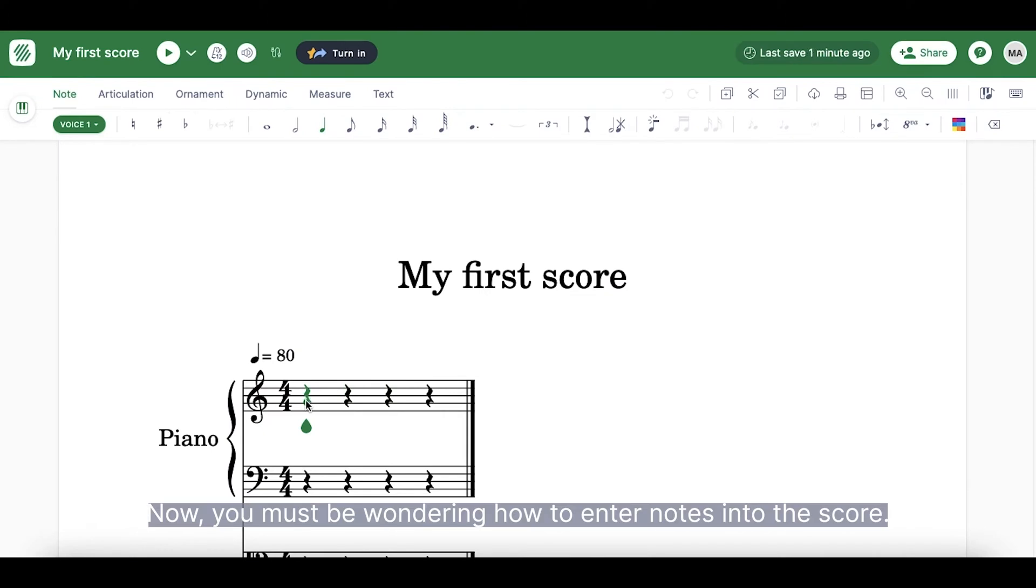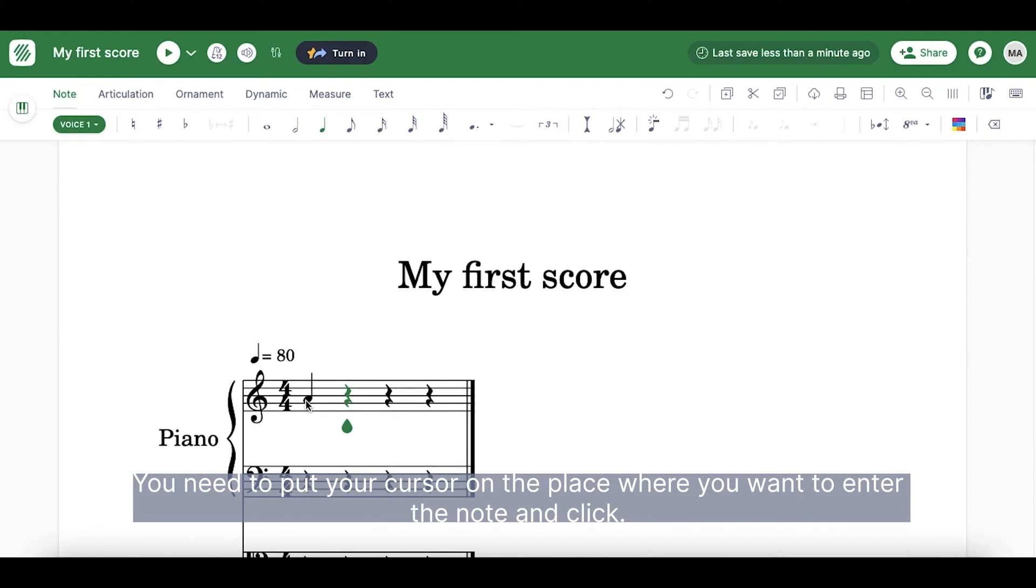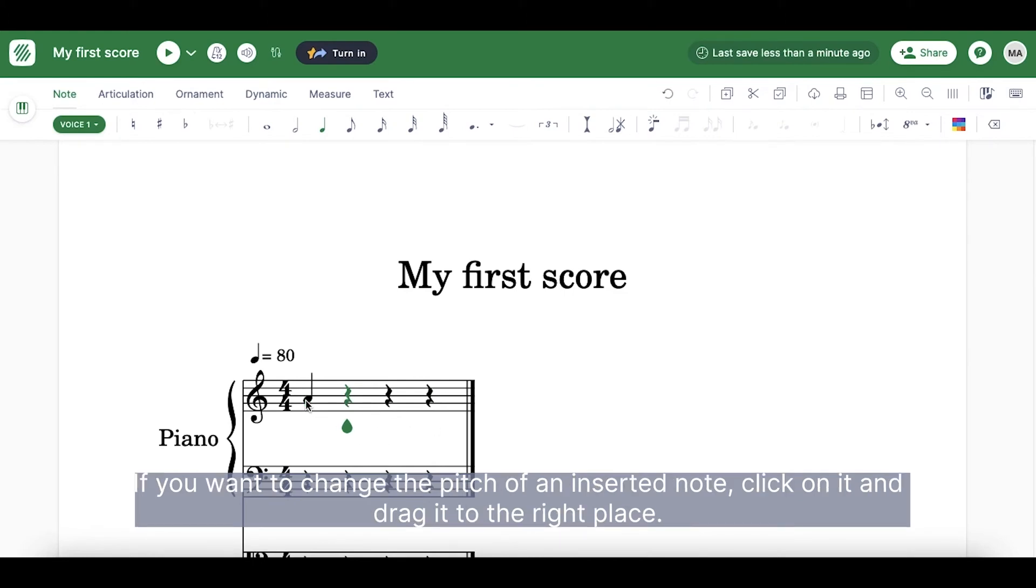Now, you must be wondering how to enter notes into the score. You need to put your cursor on the place you want to enter the note and click. If you want to change the pitch of an inserted note, click on it and drag it to the right place.